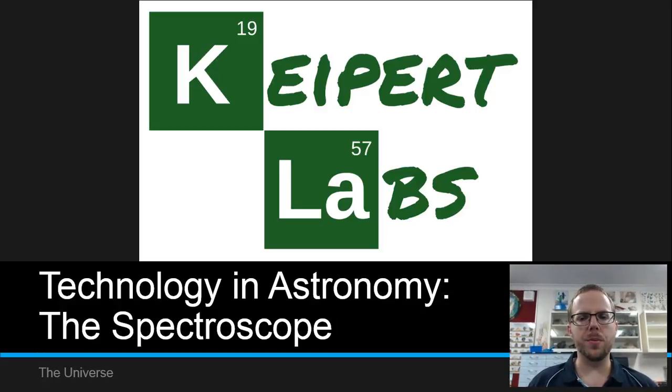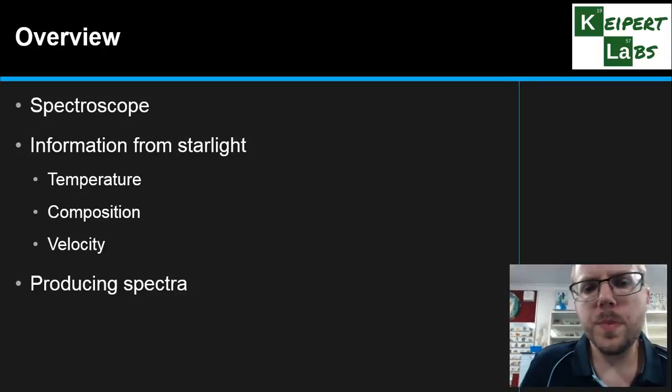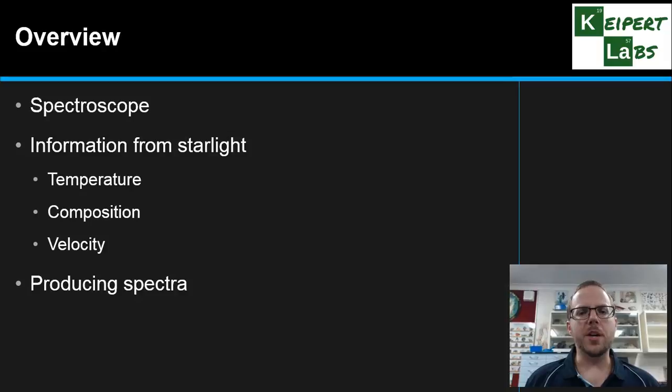As usual, let's start with an overview. We're going to talk through what a spectroscope is and what it does, and then focus on the information we can get from starlight using this instrument. We'll look at temperature, a star's composition and what elements it's made of,